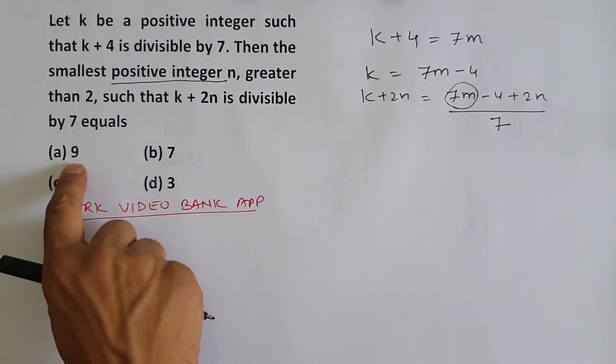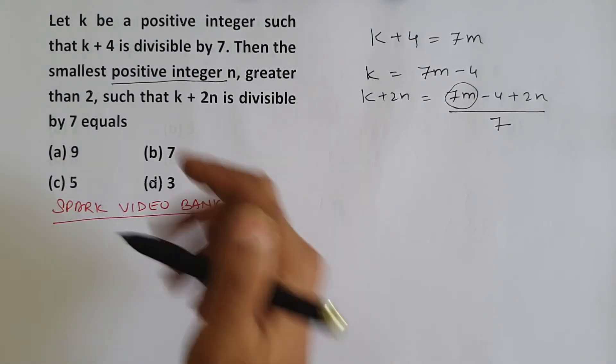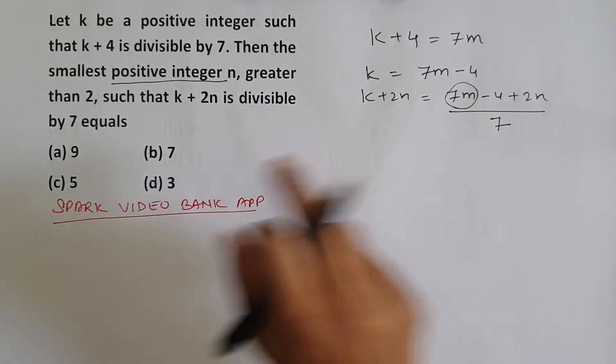We'll start checking from the answer options. Let's say I pick one from the answer options. And since smallest is asked, we'll start with the smallest. 2 times,